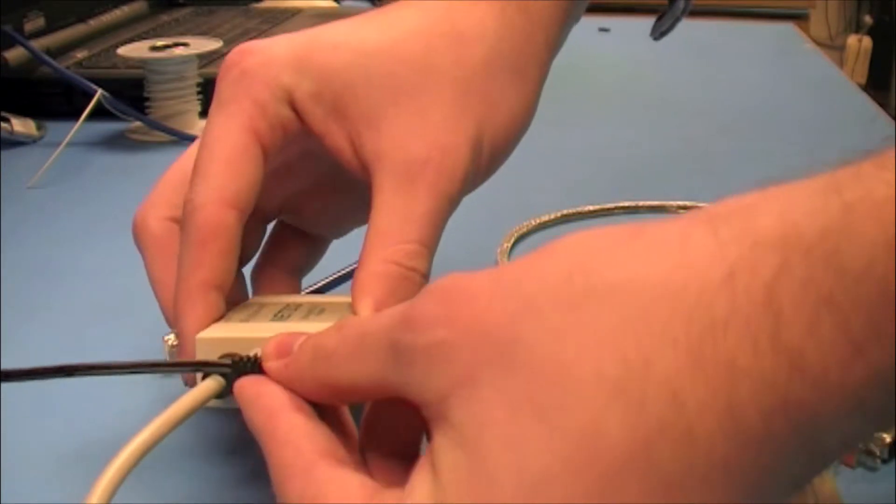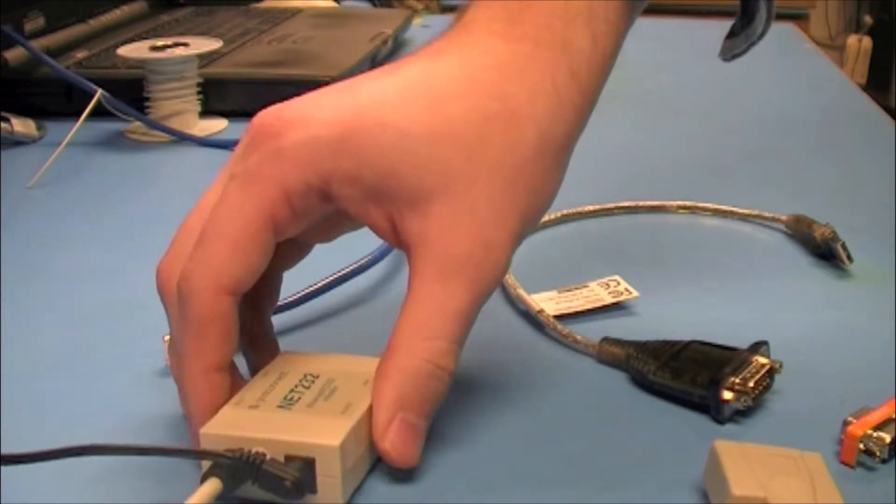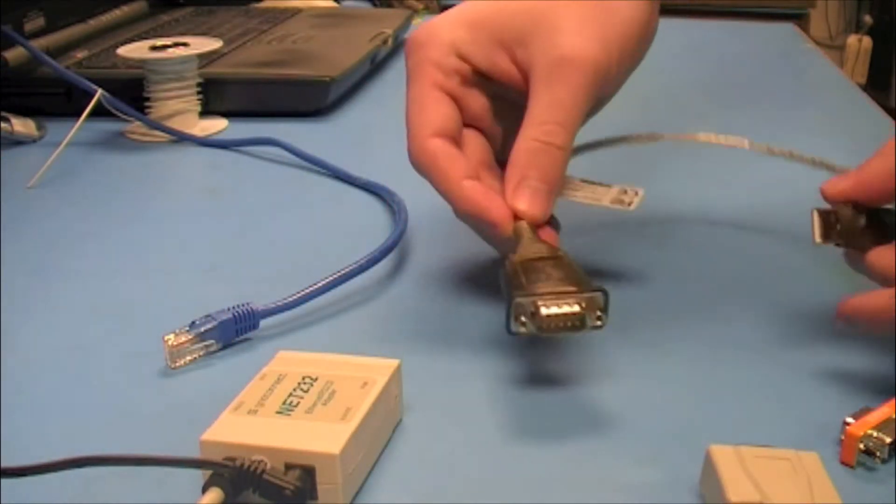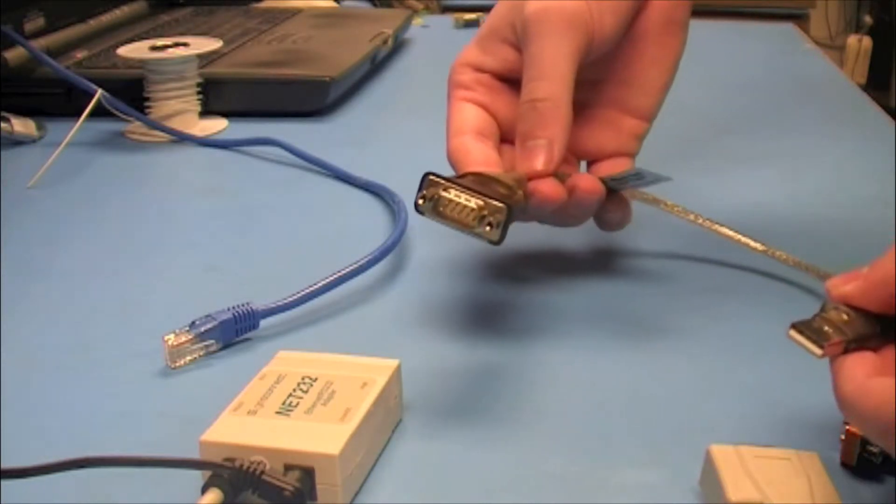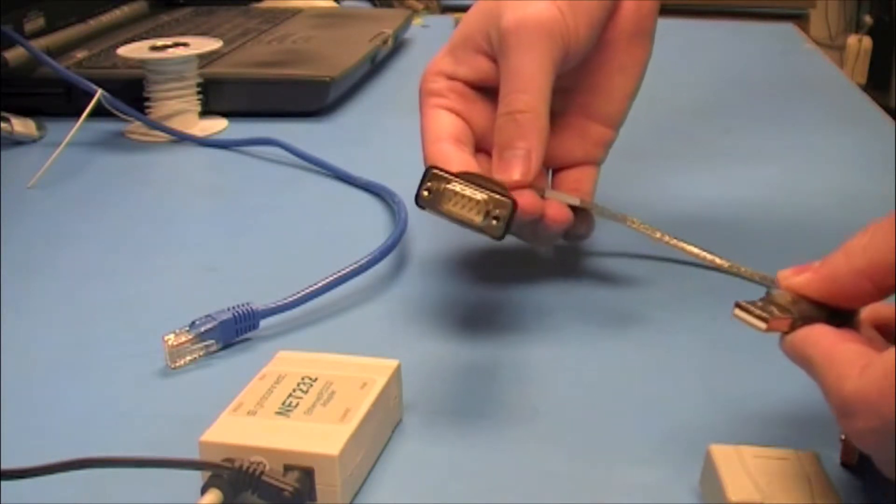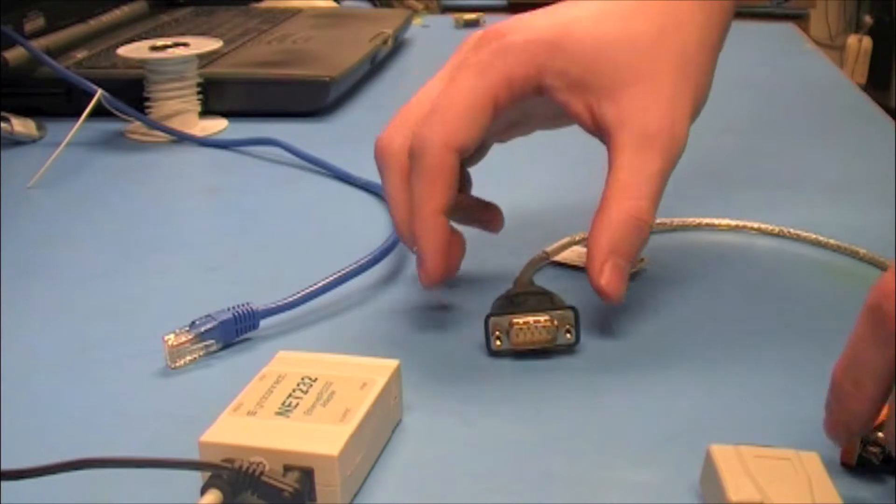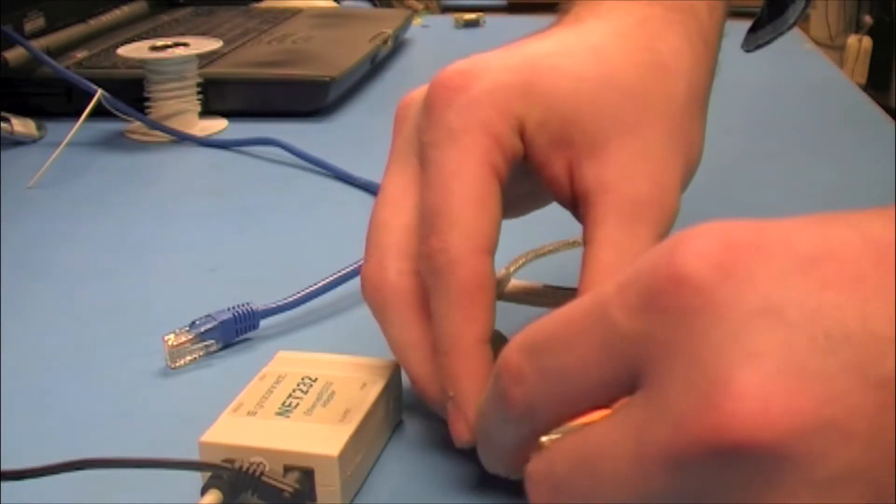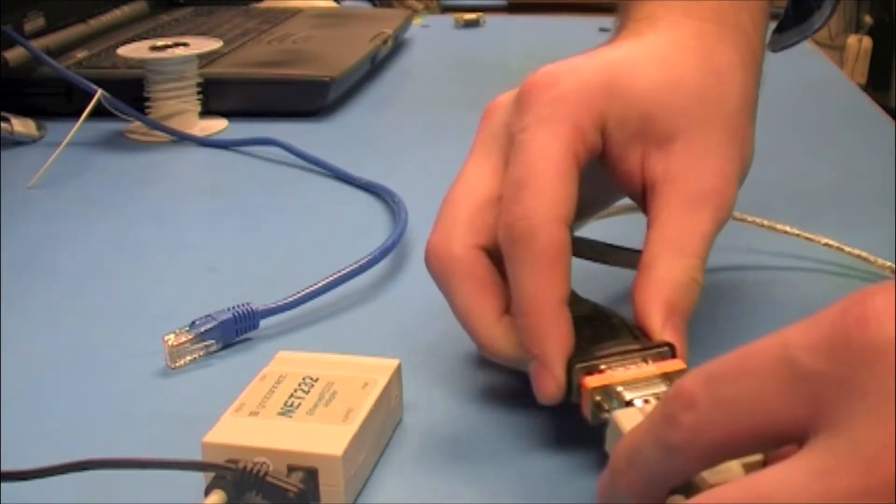First thing you want to do is hook up your power supply. Next, if you plan on using a USB to serial adapter like the ones that we sell here at GridConnect, you'll want to use a null modem adapter. Hook it up like so.